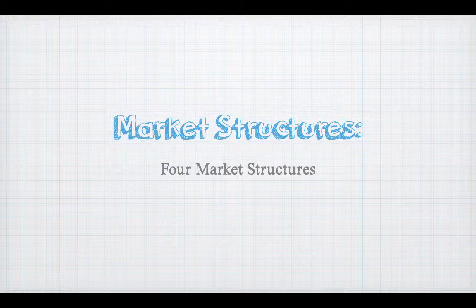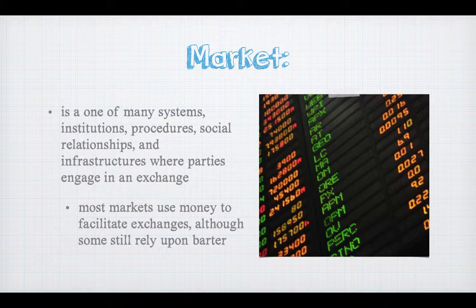Today we're going to take a look at the four market structures. There are some notes that go along with this, so make sure you get those. A market is one of many systems, institutions, procedures, social relationships, and infrastructures where parties engage in any type of exchange — it could be stocks, commodities, or going to the corner store to get a candy bar. These all fall into the idea of an economic institution that allows us to make an exchange.